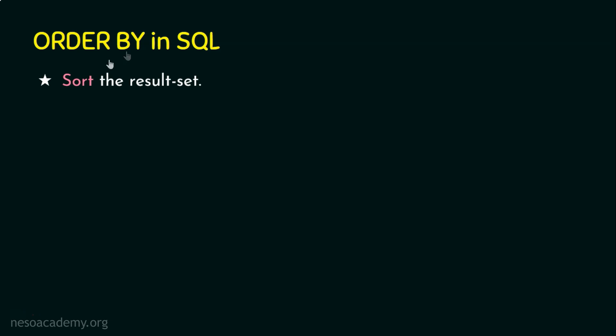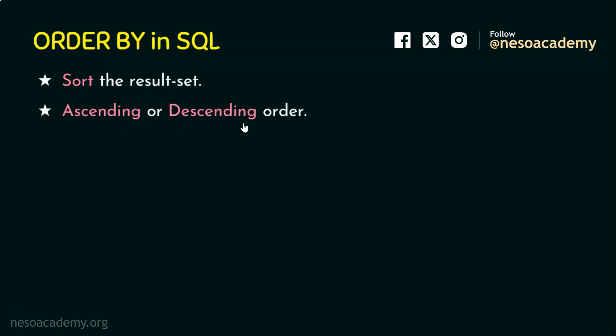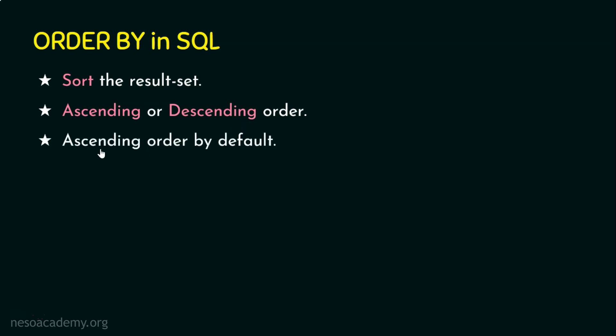When we talk about sorting, we have only two ways the result can be sorted: in ascending order or in descending order. If we have not specified which order we need — ascending or descending — the default one is ascending order.